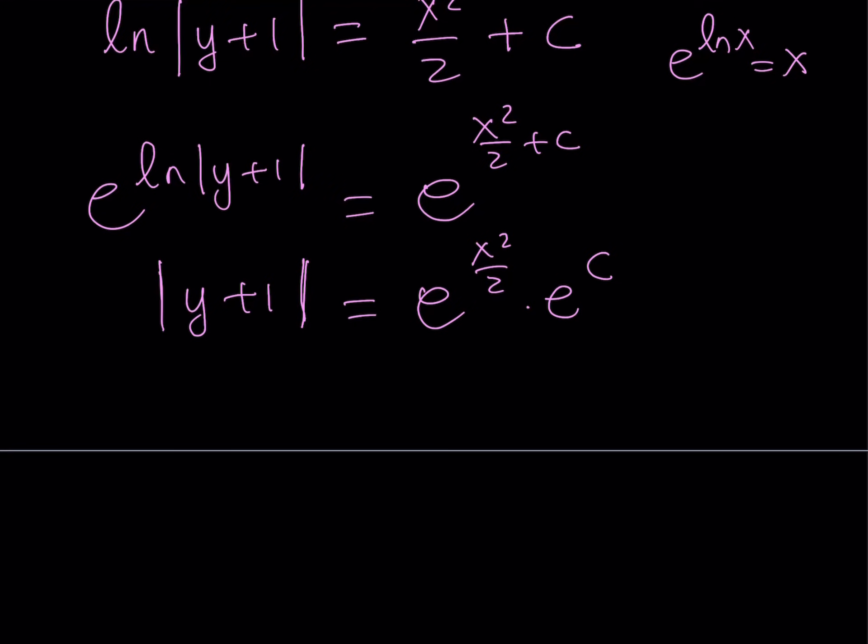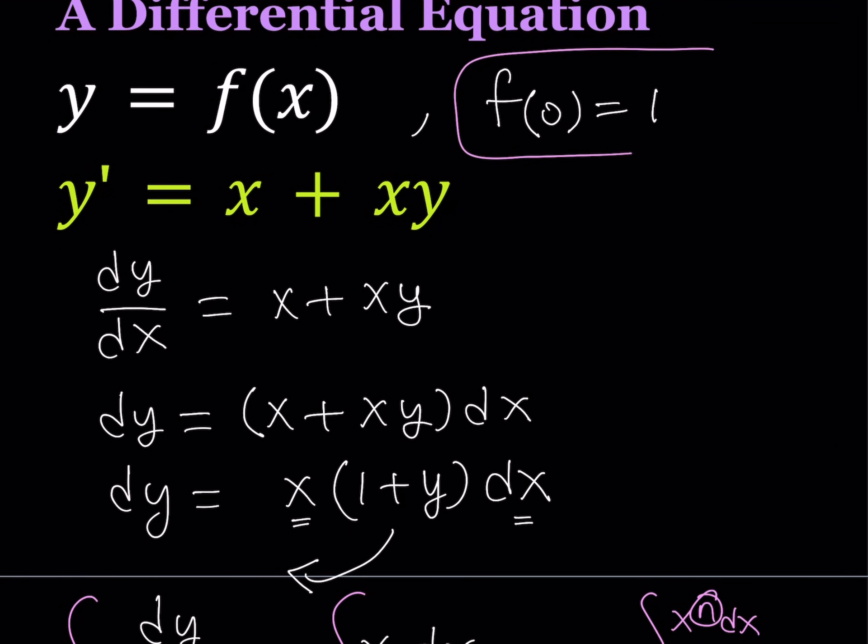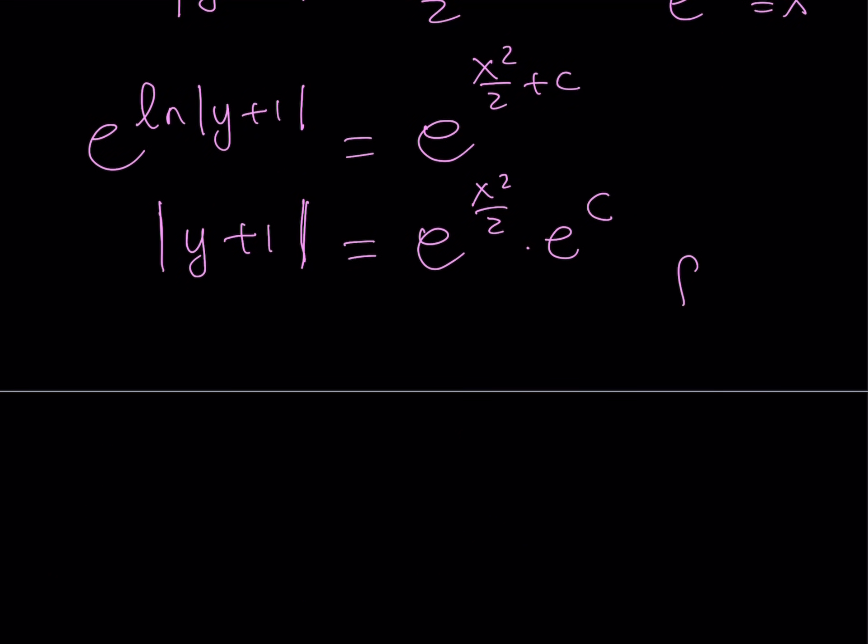Now, at this point, we want to use our initial condition. Because that's given for a purpose. We were told that f of 0 equals 1. So, now we're going to use it. Let's take note here that f of 0 is equal to 1 and explain what that means. So, it means that when x is equal to, since y is a function of x, we can write this function as y equals f of x. So, f of 0 means x equals 0. In this case, y equals 1. So, in other words, if this is a function, and of course it can be graphed, this means that 0, 1 is a point on this graph.